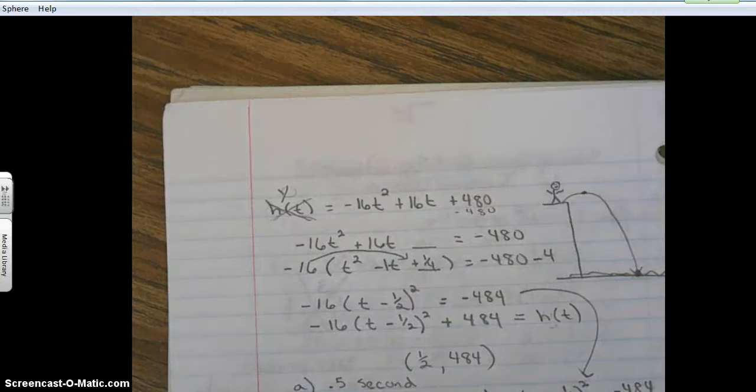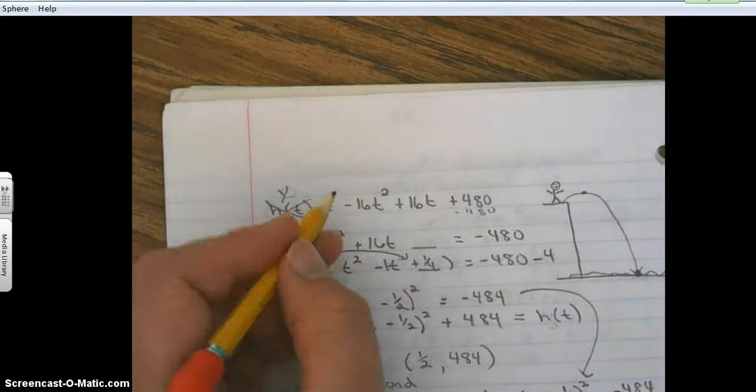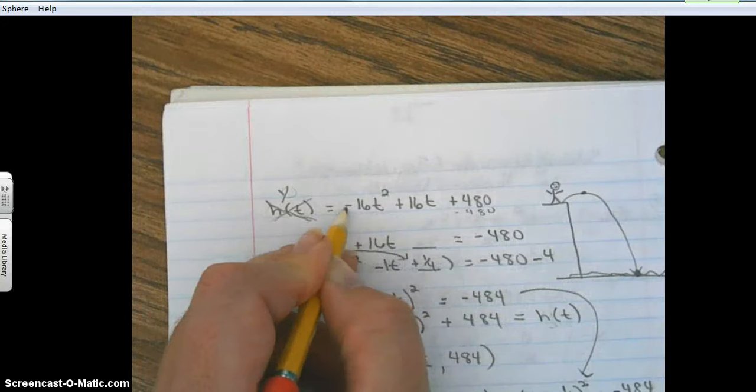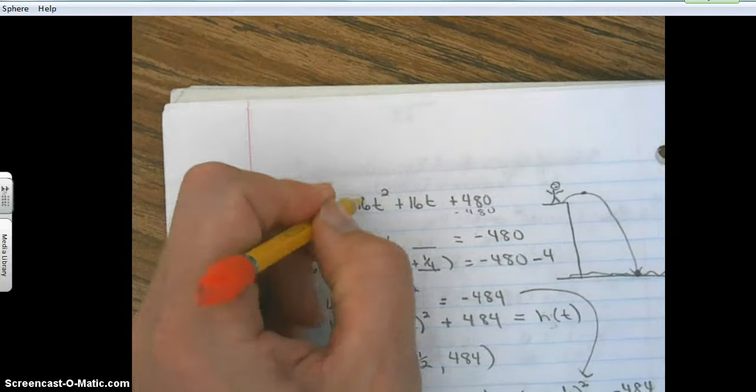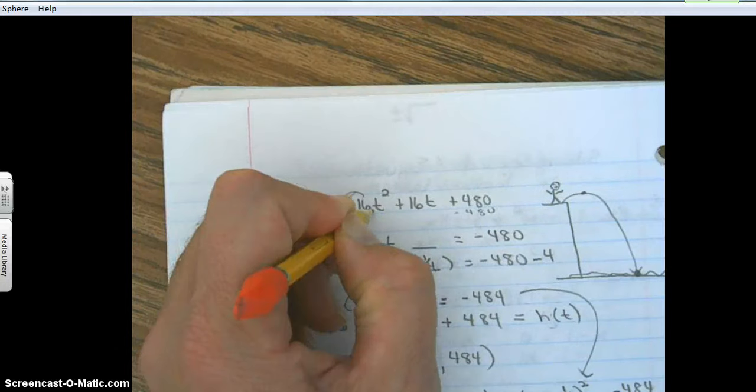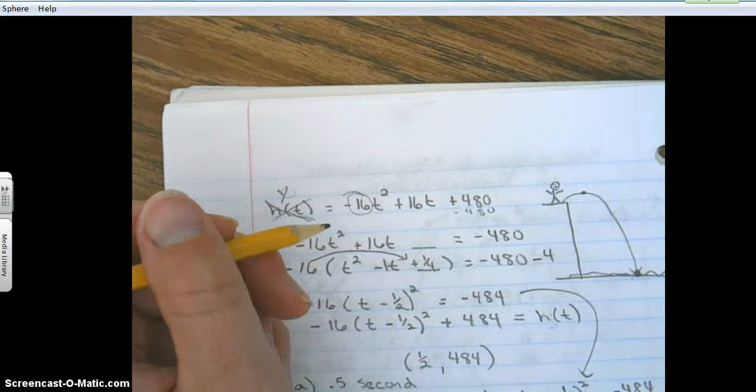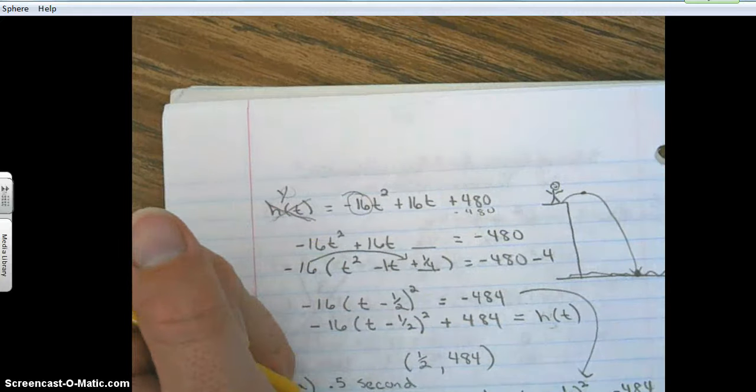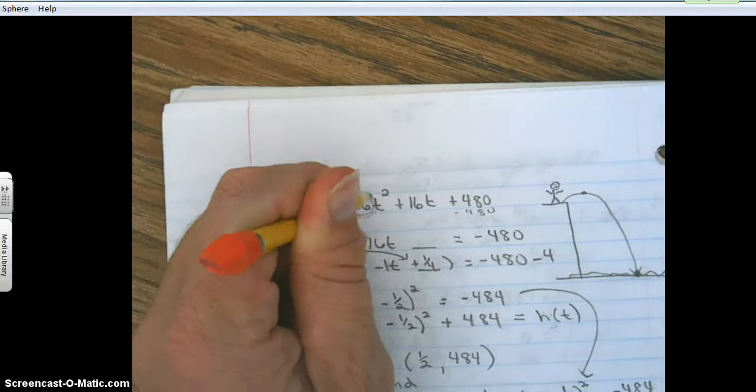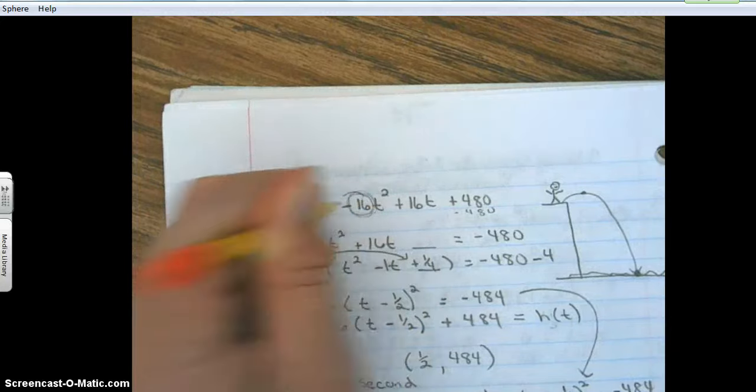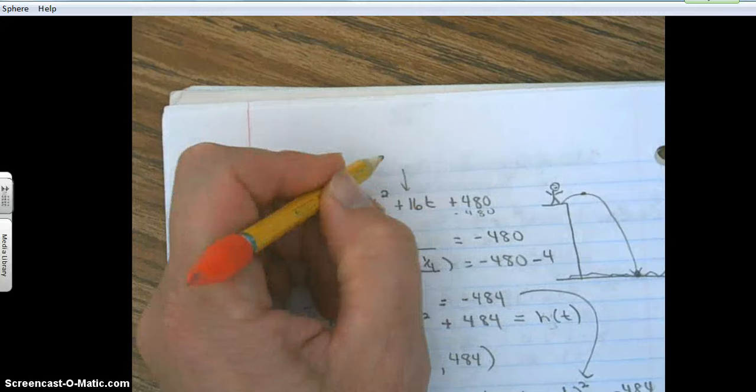I want you to know that this is the vertical motion formula. This represents the force of gravity. Even though we're in feet, gravity falls at 32 feet per second per second. To get this number in the formula, we just take half of 32, and since it's going down it's negative. This number here represents the initial velocity.